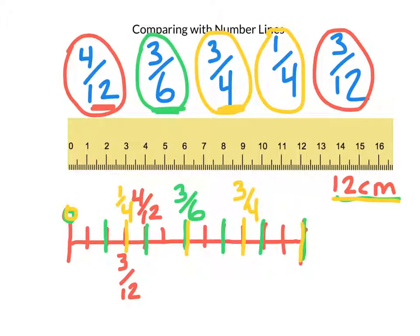Alright. And now I can easily compare them. 3/12 and 1/4 look to be the same. And then 4/12 is next. 3/6 is next. And the biggest is 3/4. So that's how we can compare multiple fractions using one number line. Alright. Have fun with your number lines.